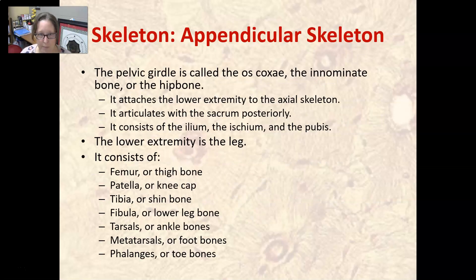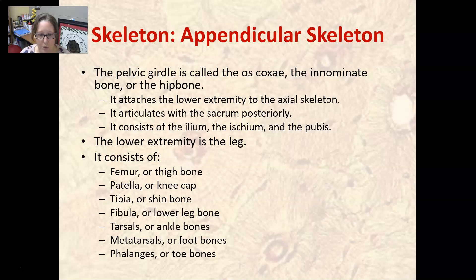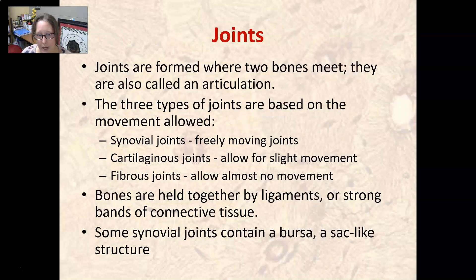The pelvic girdle — also called the os coxae, innominate bone, or hip bone — attaches the lower extremity to the axial skeleton. It articulates with the sacrum posteriorly and consists of the ilium, ischium, and pubis. The lower extremity consists of the femur (thigh bone), the patella (kneecap), the tibia (shin bone), the fibula (lower leg bone), the tarsals (ankle bones), the metatarsals (foot bones), and the phalanges (toes).